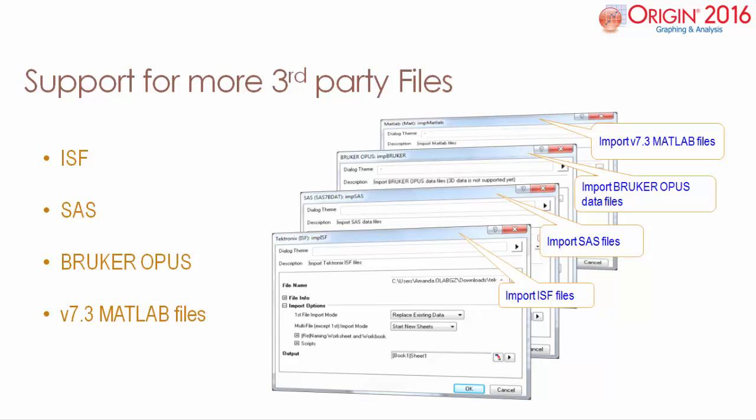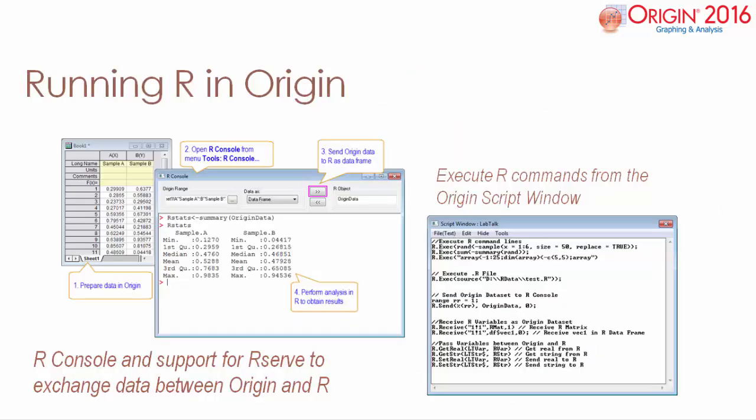Import routines from more third-party files have been added in this latest version, including ISF, SAS, and OPUS files. A MATLAB import now supports version 7.3 MAT files. With its new R console and R serve support, Origin 2016 can exchange data between Origin projects and R.